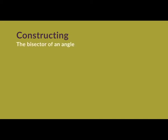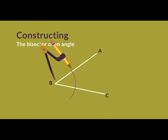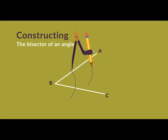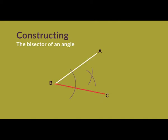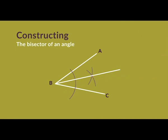An important construction, used as the basis for others, is the bisector of a given angle. Given angle ABC: Step 1, set your compasses to about half the length of the arms and place the point at vertex B. Step 2, draw an arc that intersects both arms. Step 3, keeping the compass width the same, place the point at each intersection of the arc with the arms and draw arcs between AB and BC — these two arcs intersect at a point. Step 4, draw a line from vertex B through the intersection point — this is line BD, which bisects angle ABC, so angle ABD equals angle DBC. Try this and measure the angles to check accuracy.